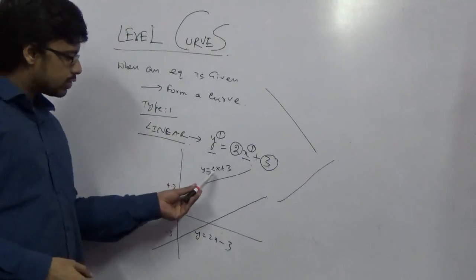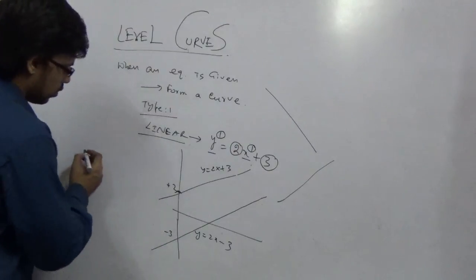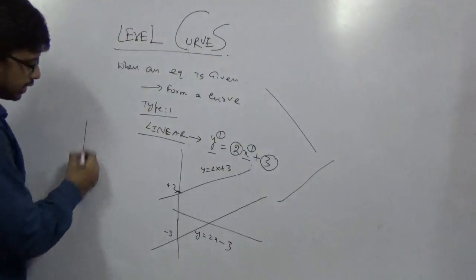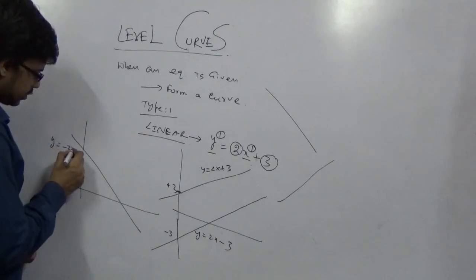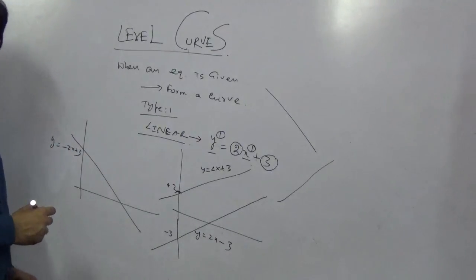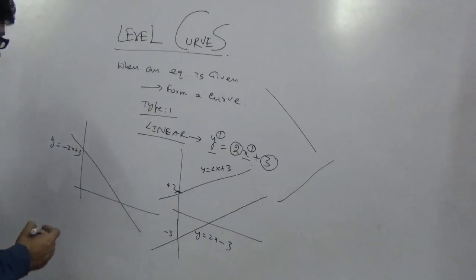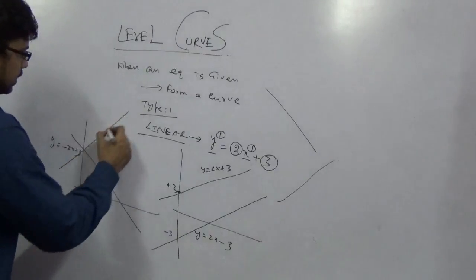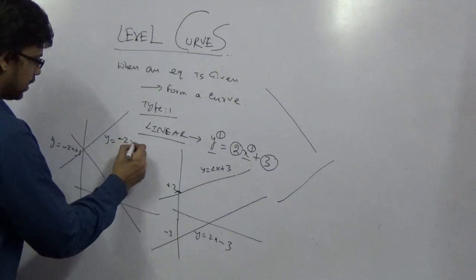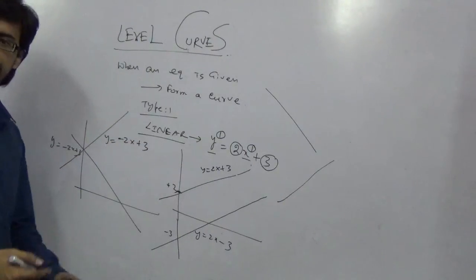Now if this value is negative like y equal to minus 2x plus 3, this curve will go downward. And if it is y equal to minus 2x minus 3, then it will have been like this.